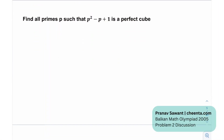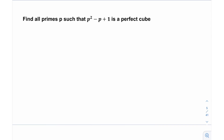So the problem states: we need to find all primes p such that p² - p + 1 is a perfect cube. This is probably the most common type of number theory problem you come across. I'm going to let p² - p + 1 = x³ for some natural number x.